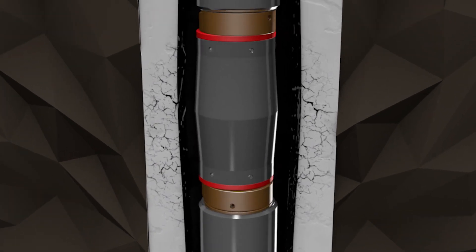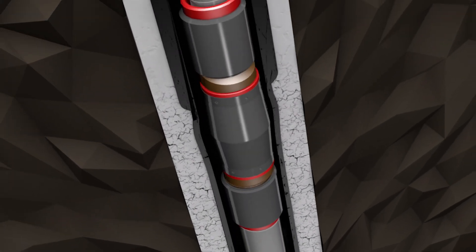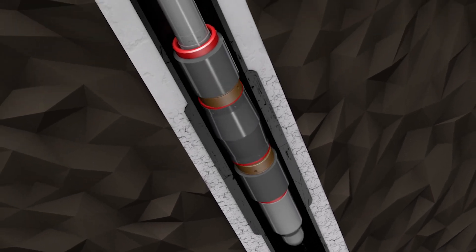It manipulates the existing casing strings, breaking down the bond between cement and casing and the structure of the cement behind the casing.